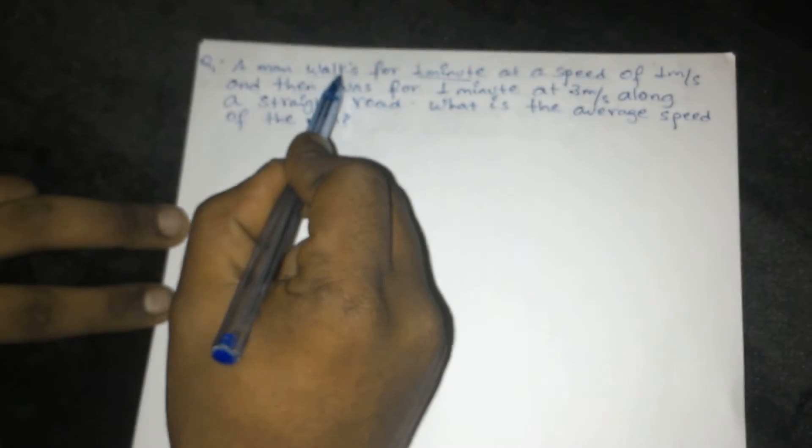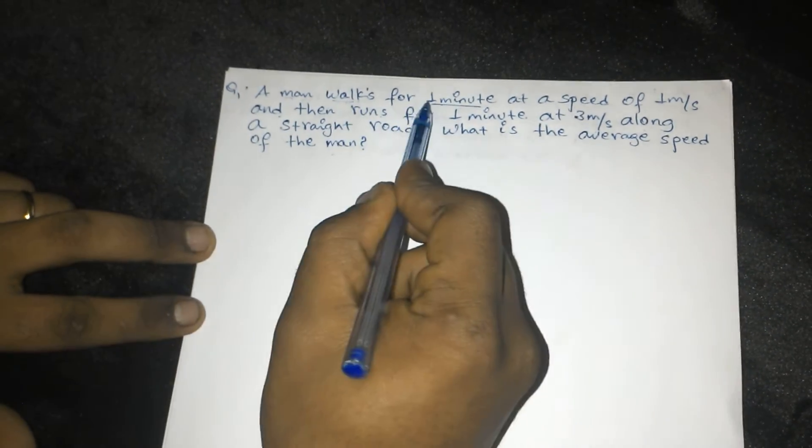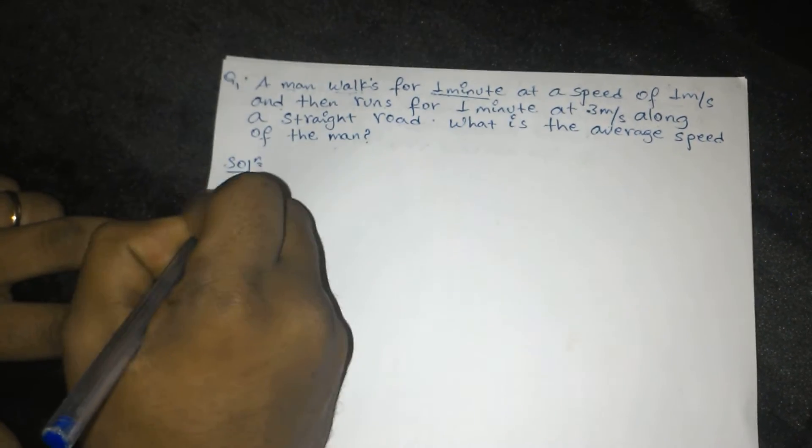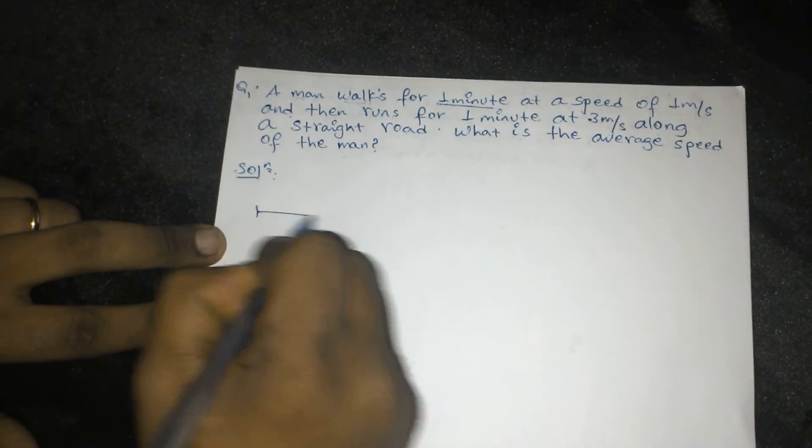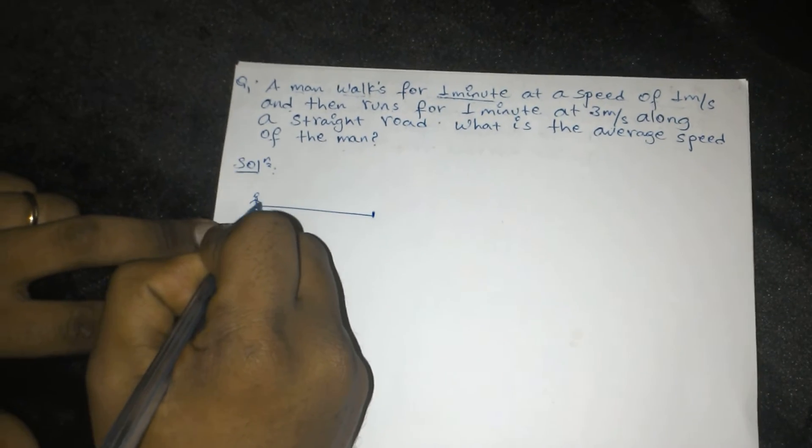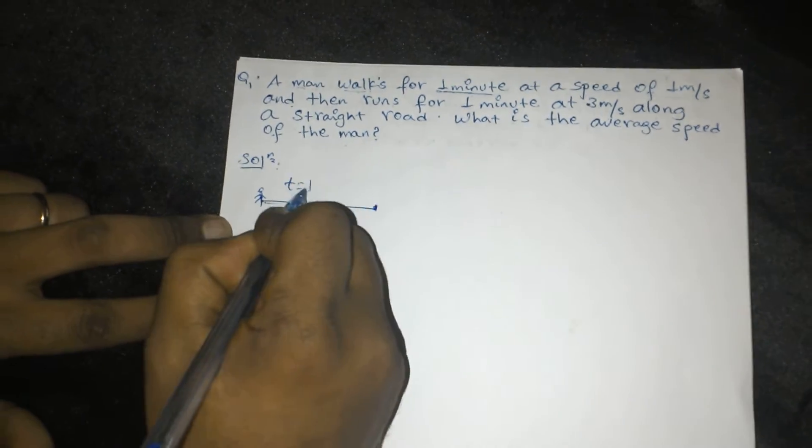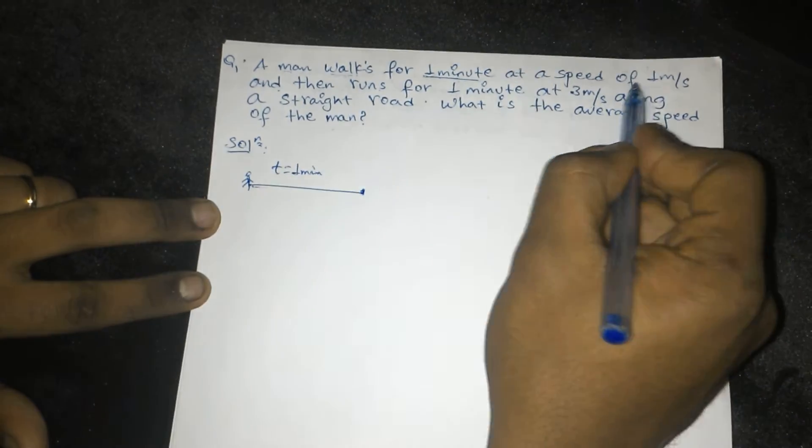So a man walks for 1 minute at a speed of 1 meter per second. This is the man and he walks for 1 minute at a speed of 1 meter per second.